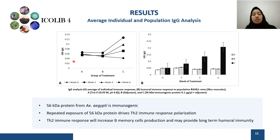Group C, treated with the 56-kilodalton protein, exhibited a higher IgG level compared with the other groups. In the population humoral immune response IgG analysis, the same results were observed. We can also see that in group C, the IgG level gradually increased along with the increase in 56-kilodalton exposure. From these study results, we can confirm that the 56-kilodalton protein is immunogenic, and repeated exposure drives TH2 immune response polarization, increasing B-memory cell production and potentially providing long-term humoral immunity in the host.